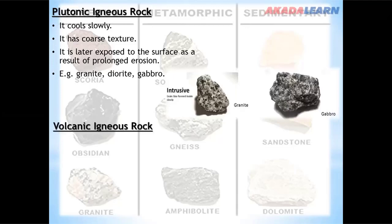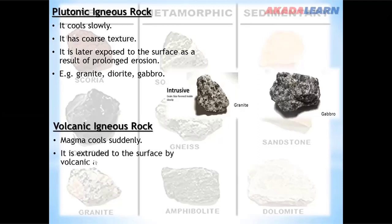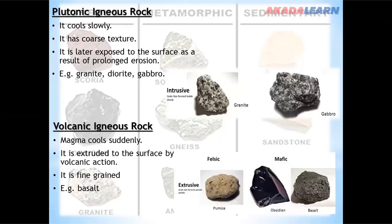Characteristics of volcanic igneous rock, the extrusive type: magma cools suddenly — unlike plutonic rock where magma cools slowly. It is extruded to the surface by volcanic action and is fine-grained. Examples include basalt, pumice, and obsidian.